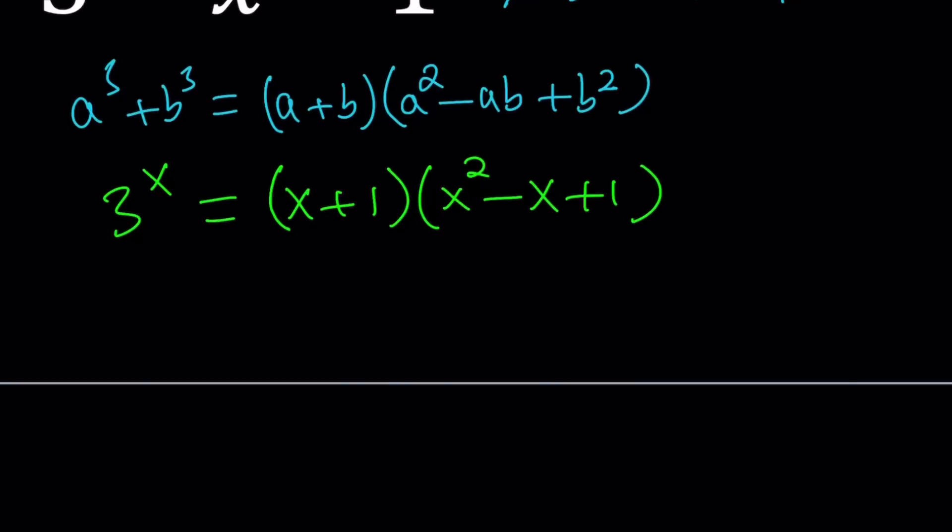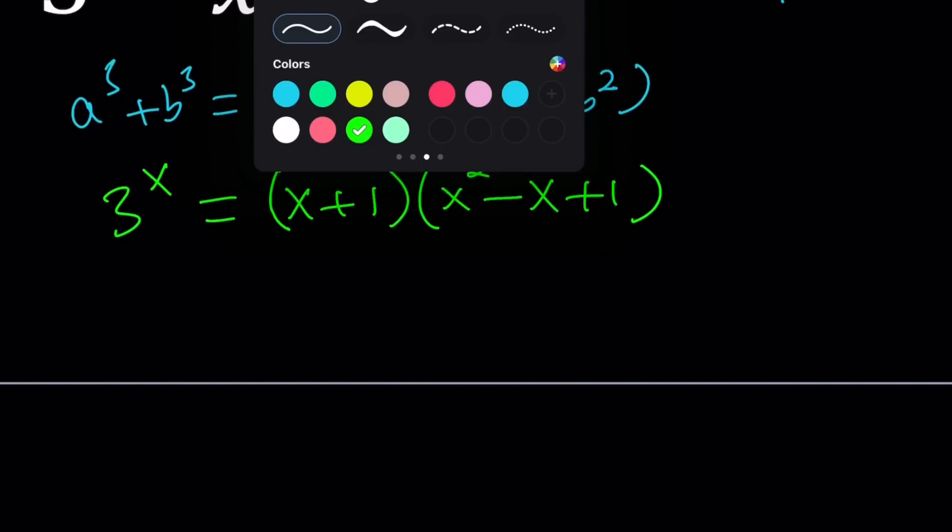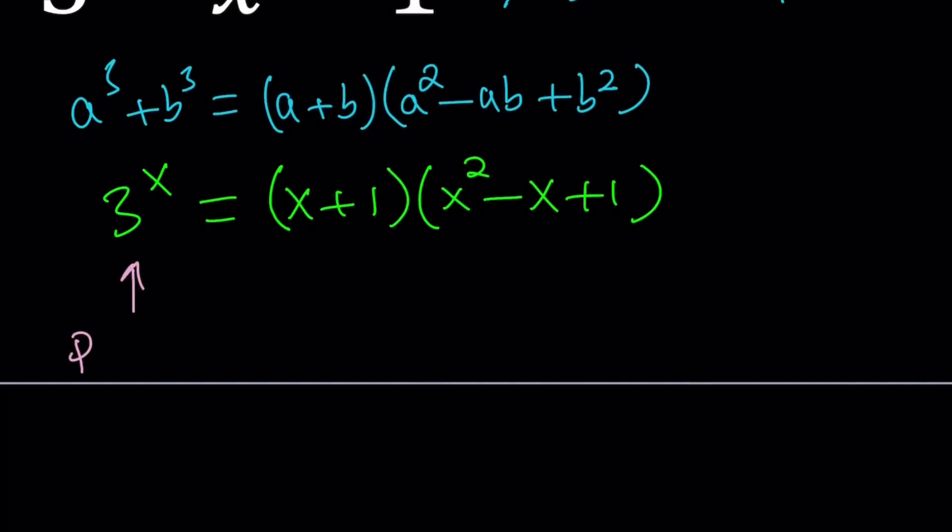Now, we have to think about the left-hand side and the right-hand side. The left-hand side is a power of 3, and we're dealing with integer solutions. So, we have a power of 3 on the left-hand side, which means we also have a power of 3 on the right-hand side. If x plus 1 times x squared minus x plus 1 is a power of 3, what does that mean? It means that both of these factors are powers of 3, or each of these is a power of 3.